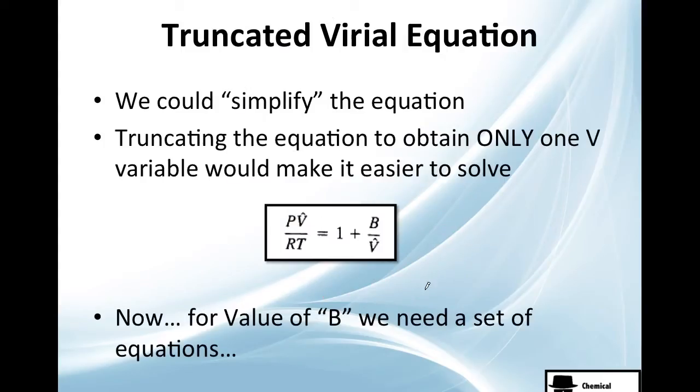A good thing to do is to truncate the Virial equation. What does that mean? We're going to ignore all the other values and only take care about these values here. It's a simplification, of course. So because it's simple, it's not that precise. Maybe we will be 98%, whereas before we could have a lot of precision.